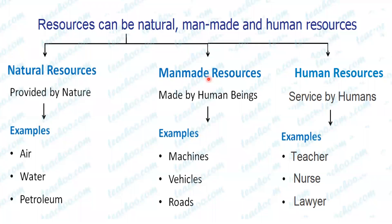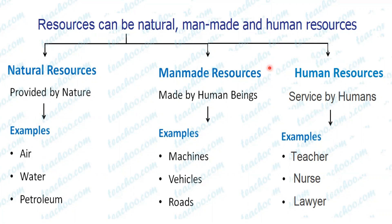Man-made resources are the resources made by humans with the help of natural resources. Machines, vehicles, roads, buildings, spars, railways — all these things are man-made resources. Human resources: we people ourselves are great resources or assets for any country. The teaching service of a teacher, the lawyer, the nurse, the doctor, banker, tailor — all these are examples of human resources.